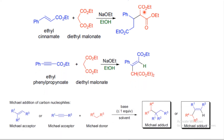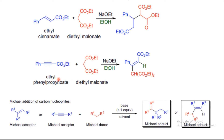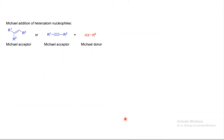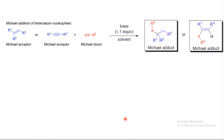Here are more examples of Michael acceptors and Michael donors in Michael addition reactions. Normally, a catalytic amount of base is enough to form the Michael addition in a best-suited solvent. One drawback of Michael addition is that it can sometimes form self-condensation products as well as 1,2-addition products, so you must carefully choose the best method and solvent.